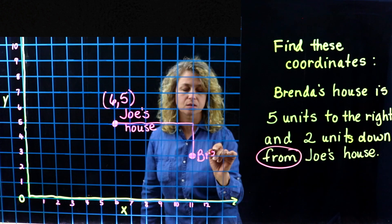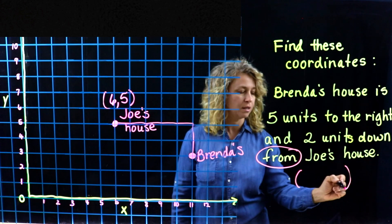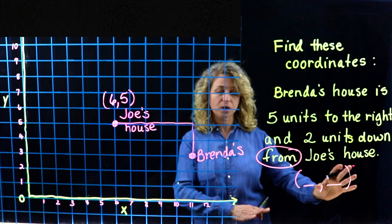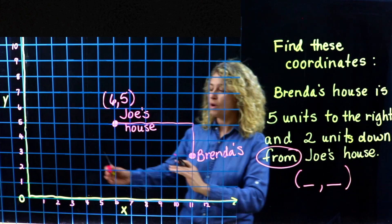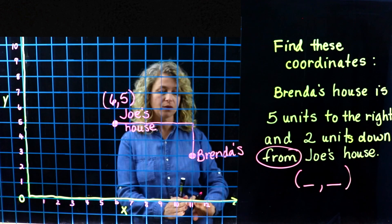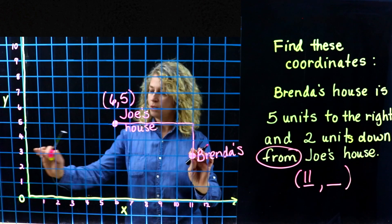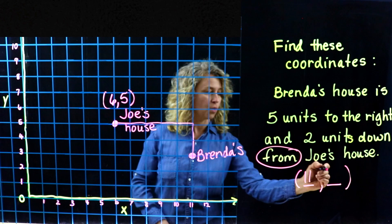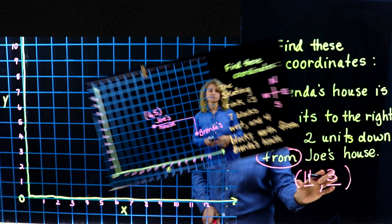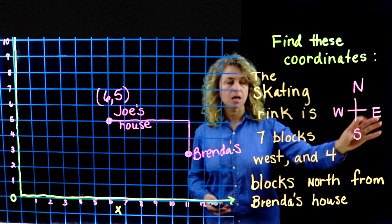Here is Brenda's house. If the question asks where that is located, we go back to the origin to find the coordinate. It is eleven for the X and three for the Y, so Brenda's house is located at eleven comma three.